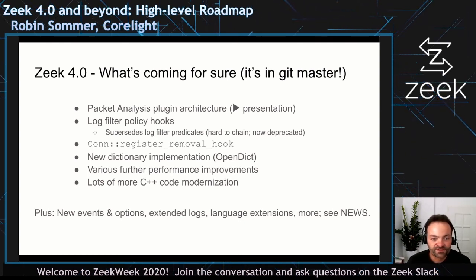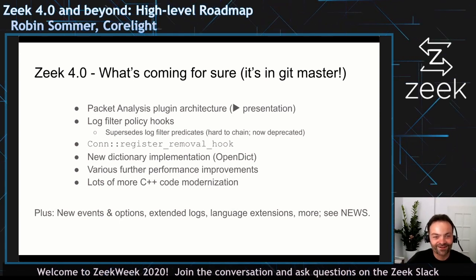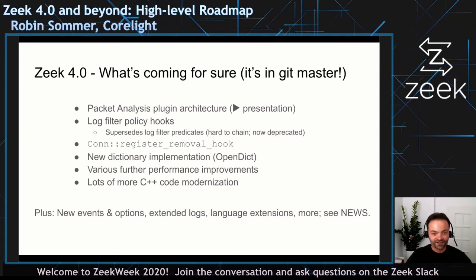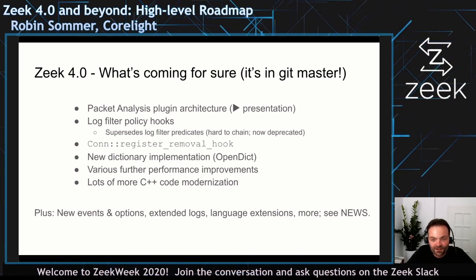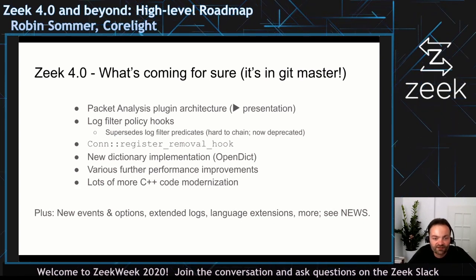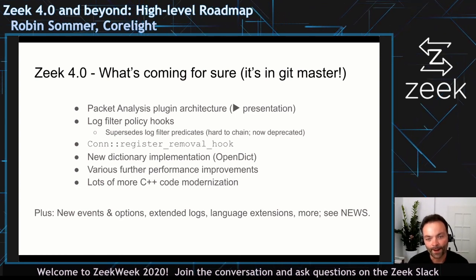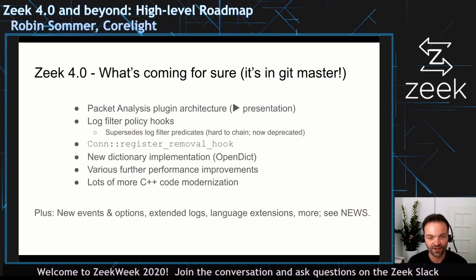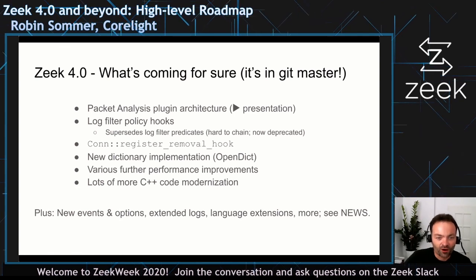Let's switch to 4.0 — stuff not yet in any release, but what's on this slide is already committed to Git master. The largest change, and maybe one of the largest changes in a while, is that we are making lower-level protocol analysis — layer 2 essentially — pluggable. We added a plugin API for that, and it actually went beyond layer 2 at this point. There will be a separate presentation on that.